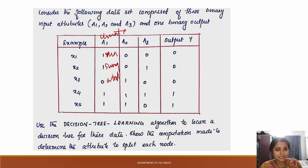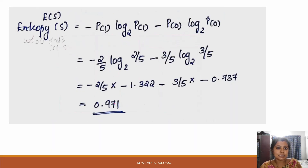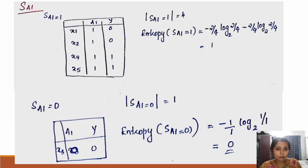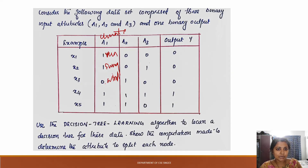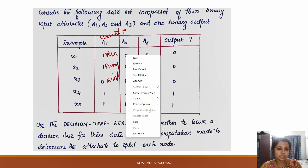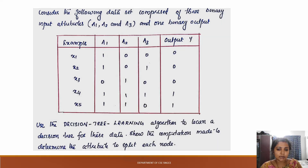If we consider these three, we will consider this process in three. A1 value is 1 and 0, and A1 can take values 1, 2, and 3.